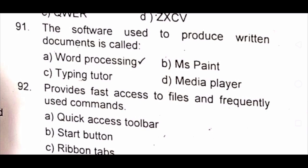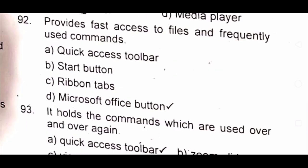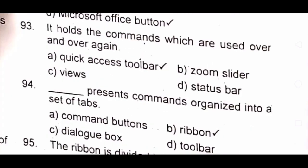Question 91: The software used to produce written documents is called A) word processing B) MS Paint C) typing tutor D) media player. The answer is A) word processing. Question 92: Dash provides fast access to files and frequently used commands. A) quick access toolbar B) start button C) ribbon tabs D) Microsoft Office button. The answer is D) Microsoft Office button.